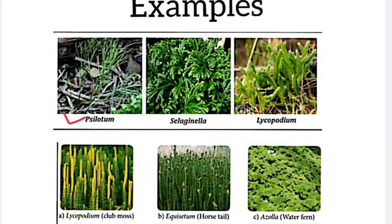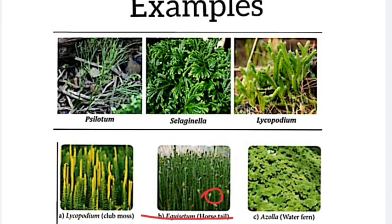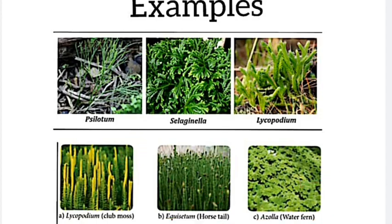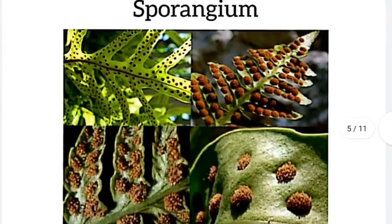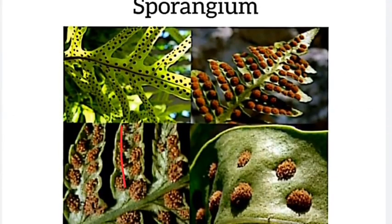Examples include Psilotum, Selaginella, Lycopodium, club moss, and water fern. These are differentiated structures — some form cones. Sporangia are present on long thin leaves. These are small structures visible in the figure showing sporangia present on leaves.